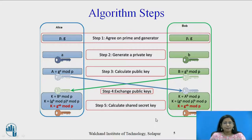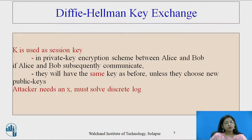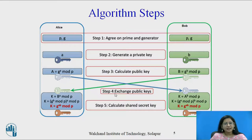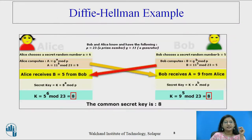The session key exchange is what makes Diffie-Hellman key exchange special. K is used as a session key in a private encryption scheme between Alice and Bob. If Alice and Bob subsequently communicate, they will have the same key as before unless they choose a new public key. Whenever the public key changes, the calculation changes and the session key changes. A session key expires after some time — that is an important characteristic of a session key. An attacker who wants to find out the key must solve the discrete logarithm.